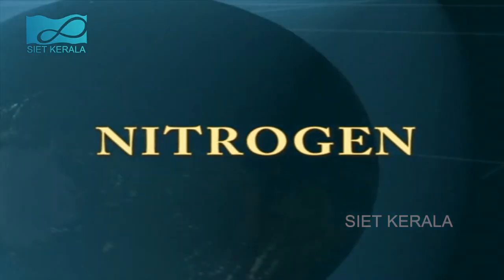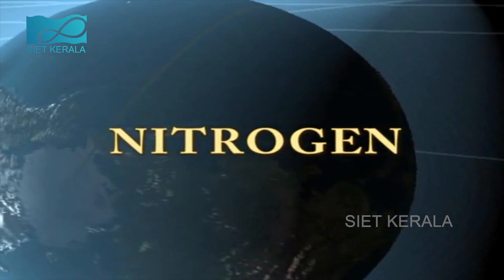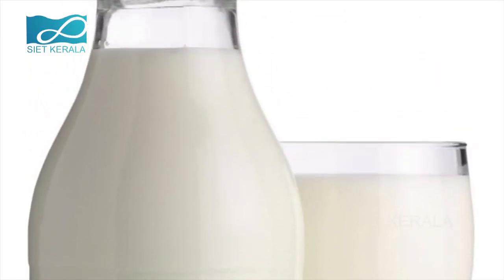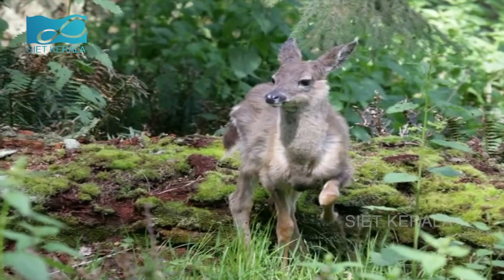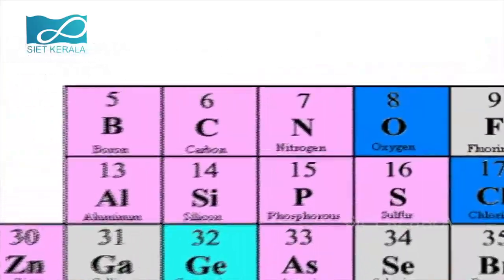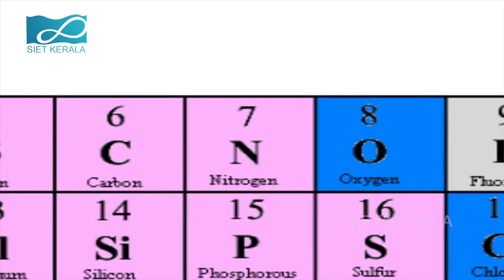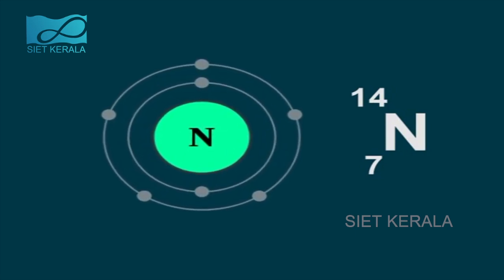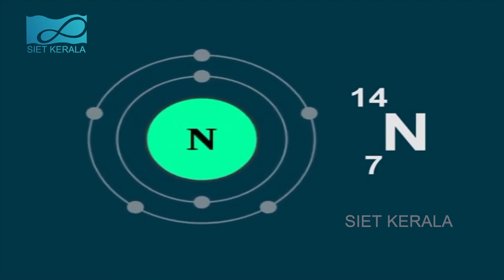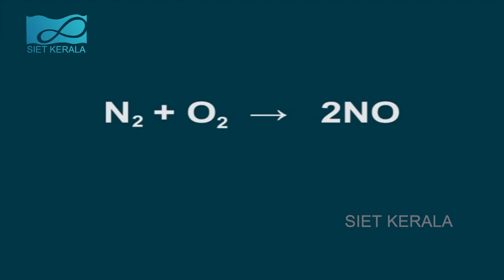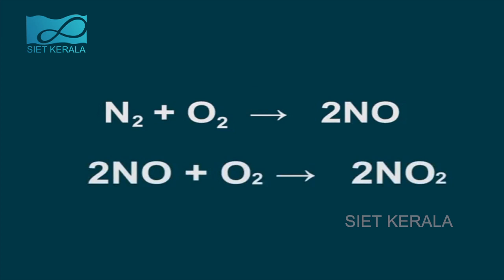The major element in atmospheric air is nitrogen, making up around 78%. It is an essential constituent of protein and is inevitable for the growth and sustenance of living organisms. In the periodic table, nitrogen is in the 15th group and second period. Its atomic number is 7 and mass number is 14. Nitrogen is colorless and inert, yet it combines with oxygen at high temperature: N2 + O2 → 2NO; 2NO + O2 → 2NO2.